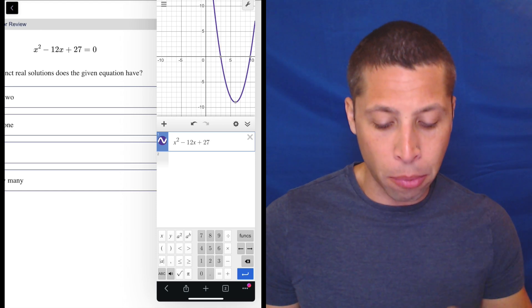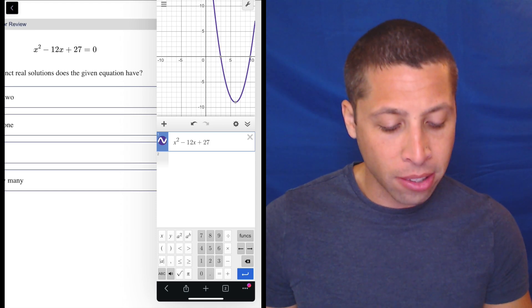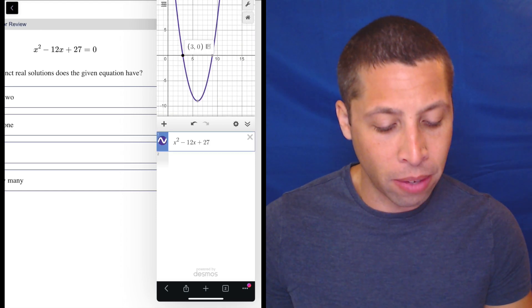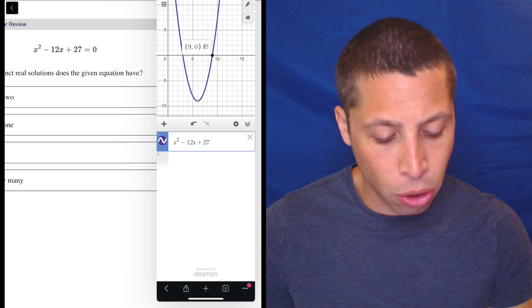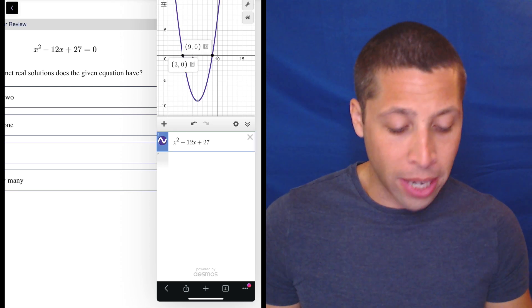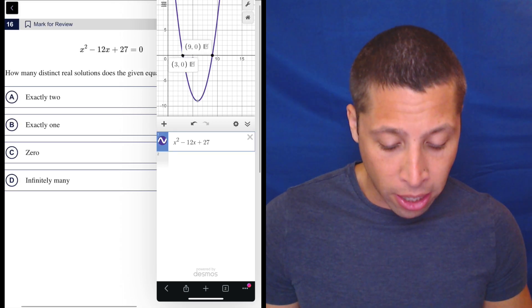And so when they're asking for the number of real solutions, they're asking for the x-intercepts. We can very clearly see there are two of them here, at three and at nine. I don't care about the numbers. I just care how many there are.